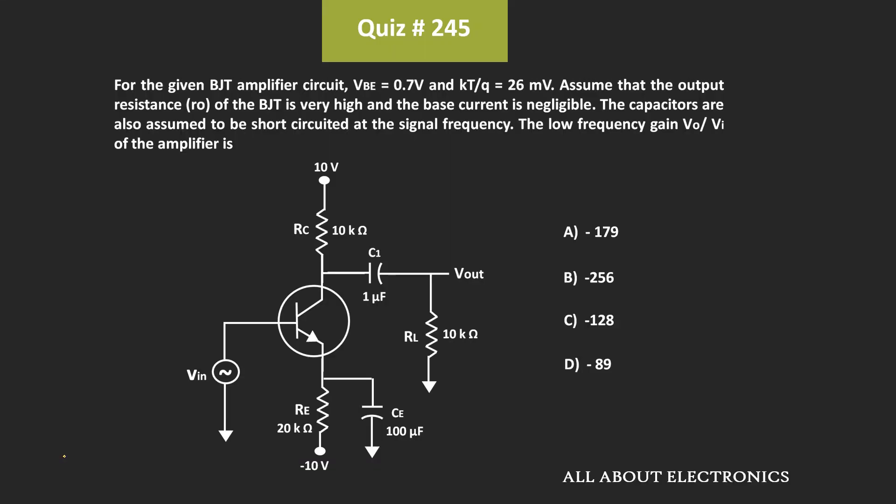Hey friends, welcome to the YouTube channel all about electronics. In this question, we have been given this transistor circuit. In this circuit, the BJT is used as an amplifier. We have been asked to find the voltage gain of the given amplifier circuit.